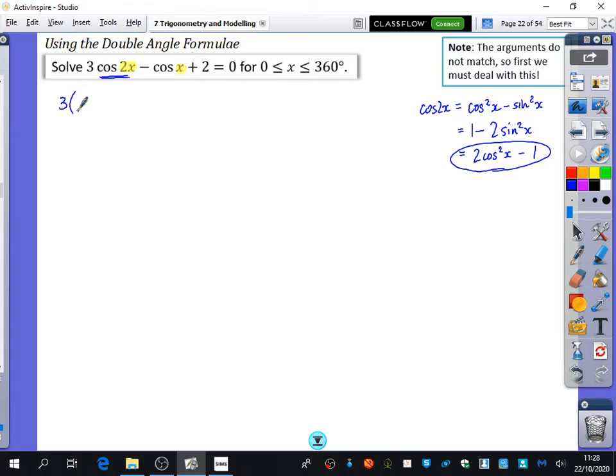So I'm going to make sure I keep the 3 there, and I'm going to make sure I bracket it, so that I can substitute in 2 cos squared x minus 1. That's my cos 2x replaced. Then I have minus cos x plus 2 equals 0. So expanding that out, I have 6 cos squared x minus 3 minus cos x plus 2 equals 0. And I'm just going to write it in the traditional way, where I start them with cos squared, then cos, and then it will be a minus 1 like this.